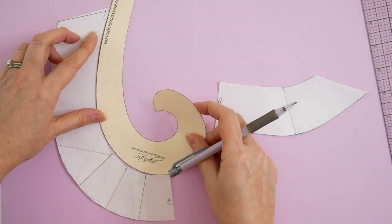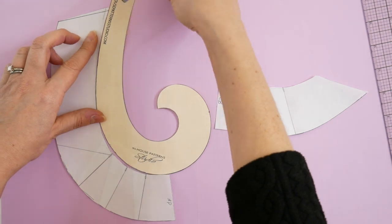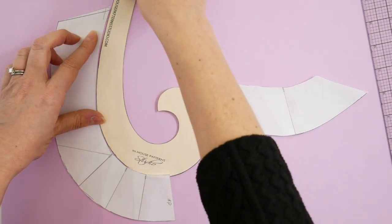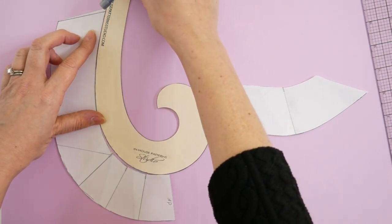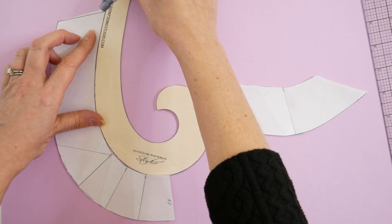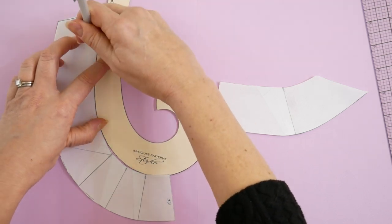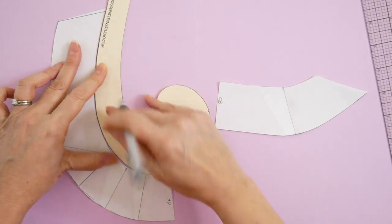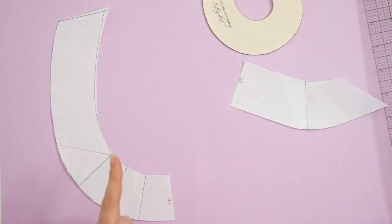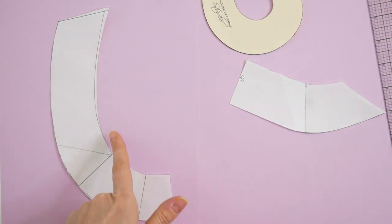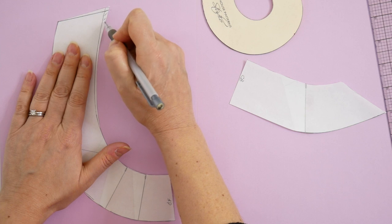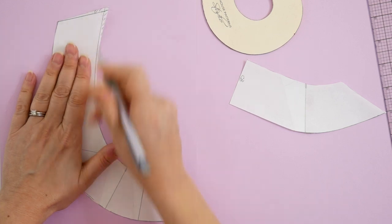So I'm going to use my curve and just create a new line that blends into my existing neckline. You're going to see here it kind of tapers to nothing as we get into the neckline. We are going to remove this area of the neckline.